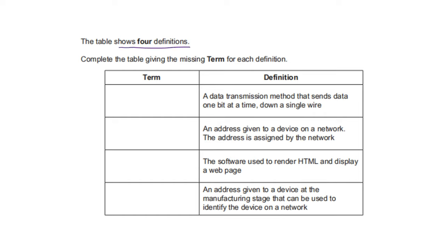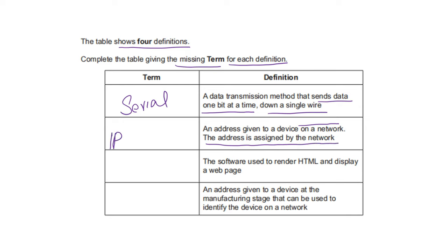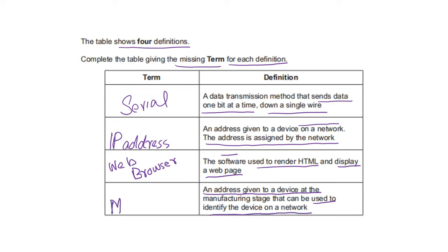The table shows four definitions — give the missing term for each. A data transmission method that sends data one bit at a time down a single wire — that is serial data transmission. An address given to a device on a network, assigned by the network — that is an IP address (internet protocol address). The software used to render HTML and display web pages — that is a web browser. An address given to a device at the manufacturing stage that can be used to identify the device on a network — that is a MAC address (media access control address).